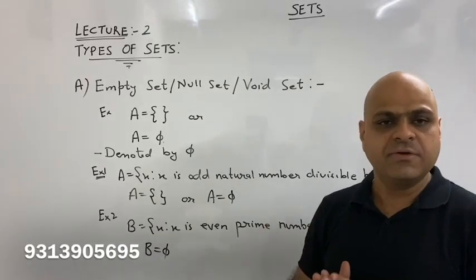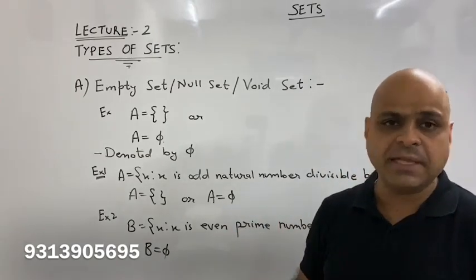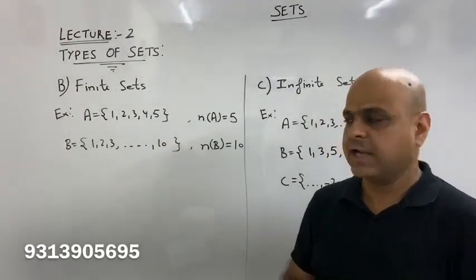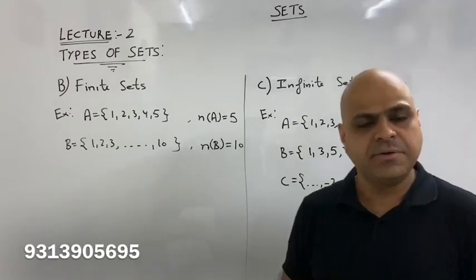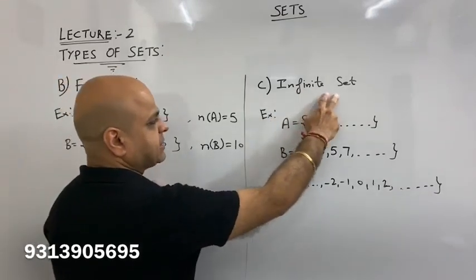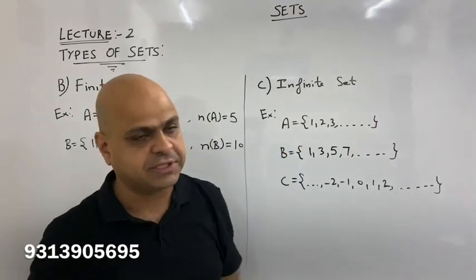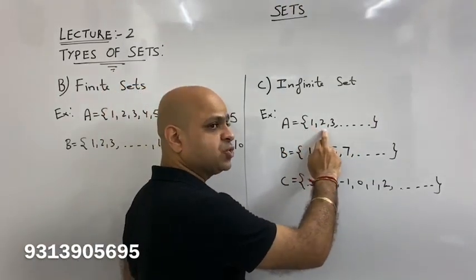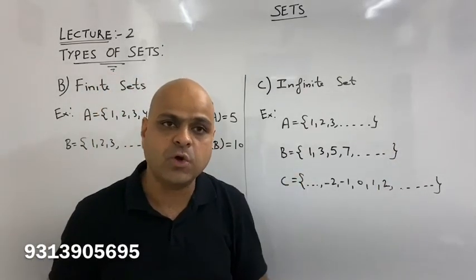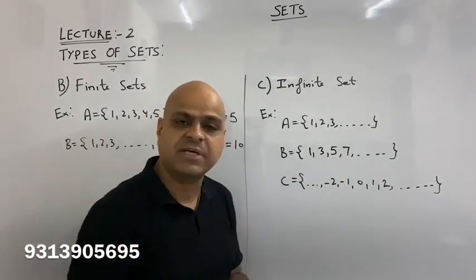The next type is Finite and Infinite Sets. We will see all the types. Next type is Finite Set. Finite and Infinite Sets — for example, the set of natural numbers 1, 3, 5, 7... the set of all odd natural numbers.